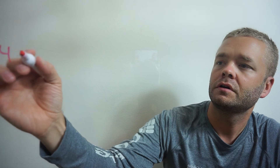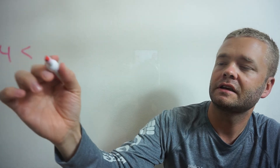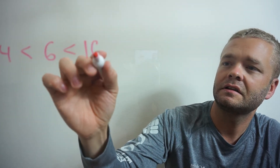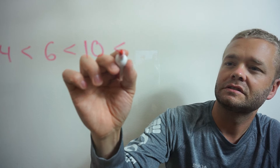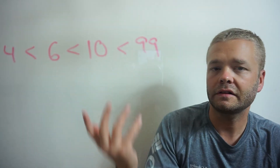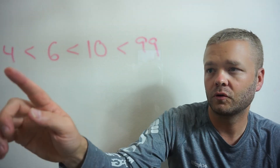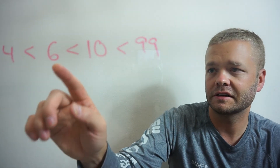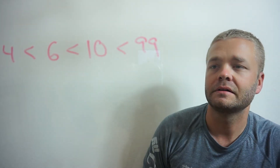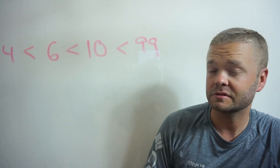You can have multiple greater than or less than symbols. For example: 4 is less than 6, which is less than 10, which is less than 99. You can write that — it makes sense. 4 is less than 6, 6 is less than 10, 10 is less than 99. You might see problems like that.